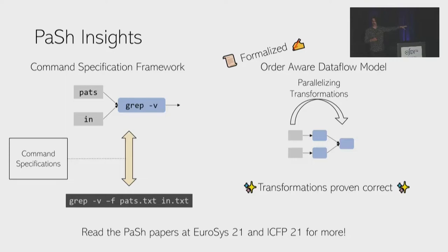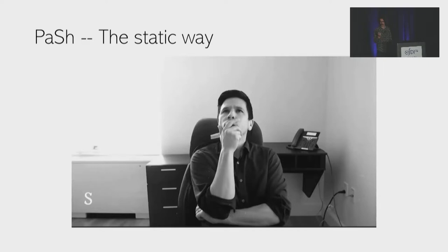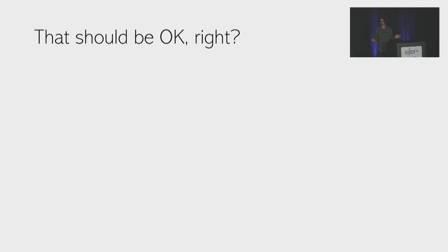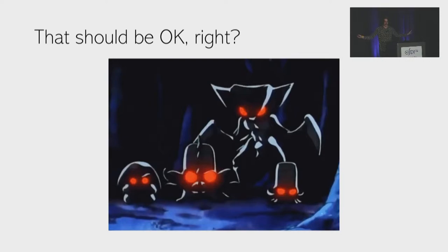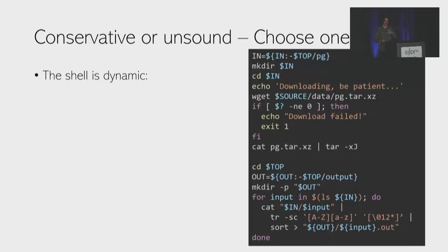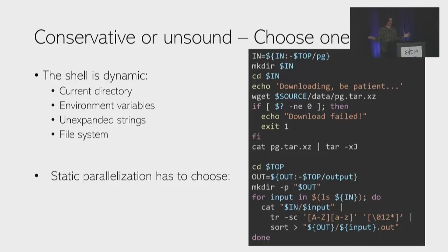PaSh originally followed a static approach, performing parallelization ahead of time — guided by PL researchers who said we should do static analysis. But the shell is very dynamic. A script's execution depends on the current directory, environment variables, unexpanded strings, and the state of the file system. Static parallelization must choose to be either sound but conservative — aborting when encountering dynamic information — or unsound and optimistic, assuming variables won't change throughout the script, which is not really valid.